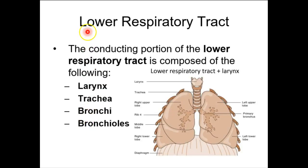Now the lower respiratory tract, including your larynx, your voice box, your trachea, your bronchi, and your bronchioles. Very much like arteries to arterioles — as they get smaller, we give them that '-ole' suffix. It gets smaller and smaller. Now they're bronchioles.